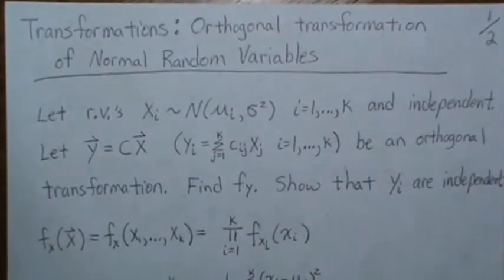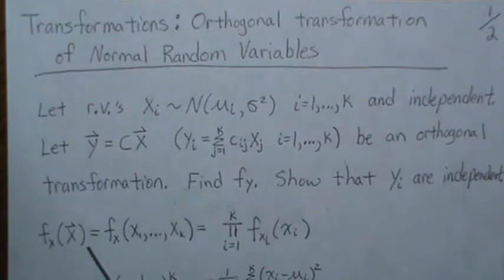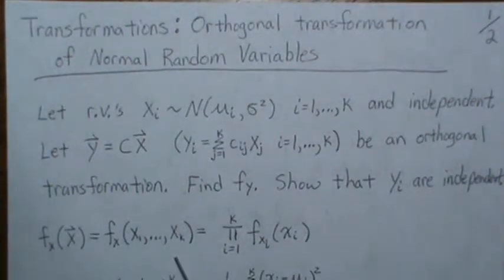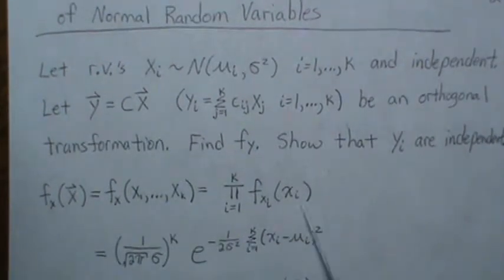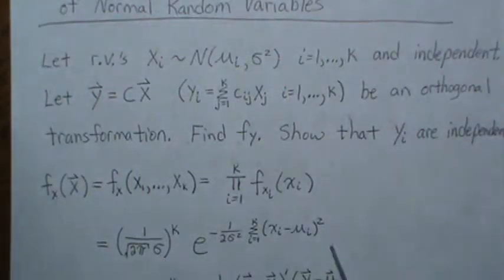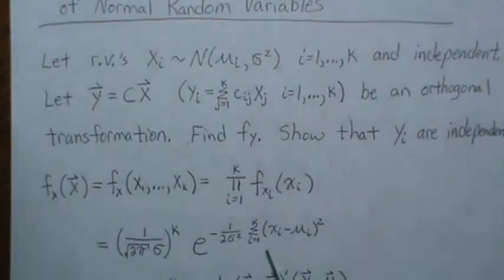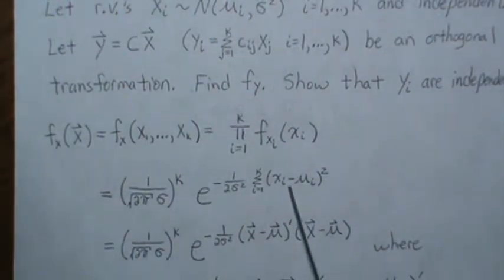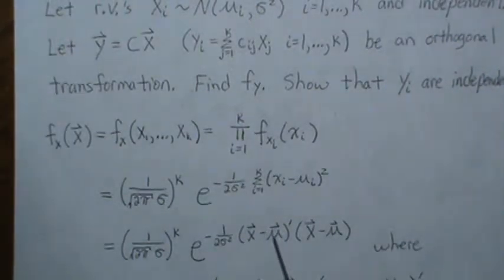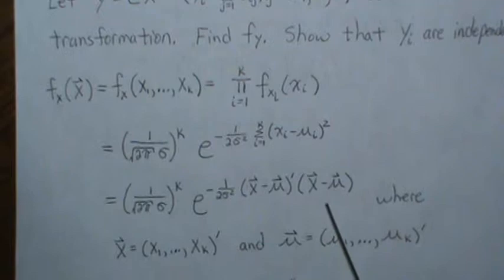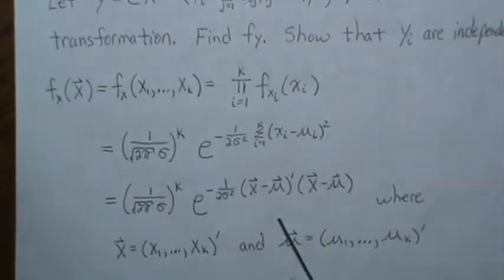First, the joint distribution of the X's can be written in vector form, or component-wise from 1 to K. Since they're independent, it's the product of the individual densities. They're all normal, so it's the product of the constants and the sum of the exponents. In vector notation this becomes a compact quadratic form: (X - mu) transposed times (X - mu), divided by 2 sigma squared.